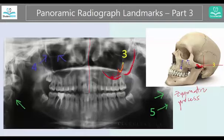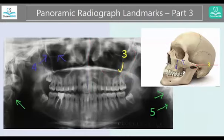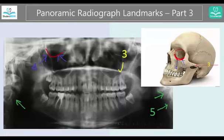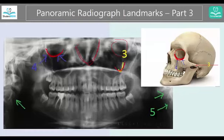Let's jump to number four. Number four is this area — try to highlight this whole entire area. This is the bottom of the orbit. You can see your eyeball would be here and the bottom is formed by many different bones. There's no other structure that looks like just a U or round that is so high up. So you can imagine the eyes over here, the nose over here, and your cheekbone — the zygomatic process — over here.